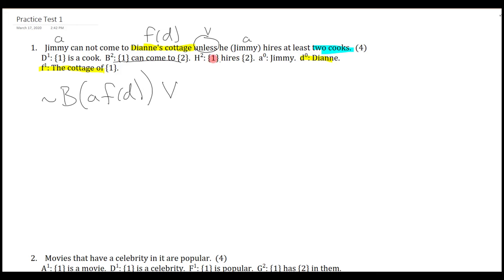Then we have the unless. You can do the unless, the if not one, then the other way. But we're perfectly happy with the OR, I'm sure, at this point in the course. So now it says, unless Jimmy hires at least two cooks. So there's the hires relation, there's a cook. So how do you hire at least two cooks? Well, there is a cook, X, and Jimmy hires that thing. And we say there is a cook, Y, and Jimmy hires that thing. And X doesn't equal Y. Close a bunch of brackets, and that's it.